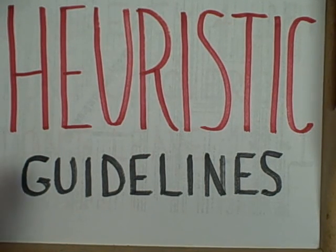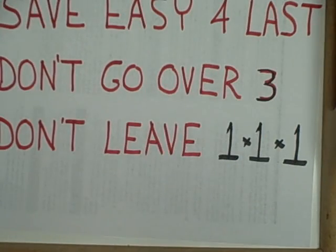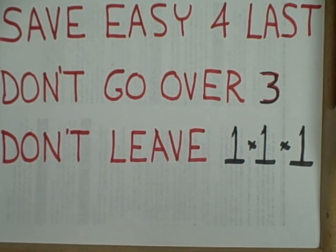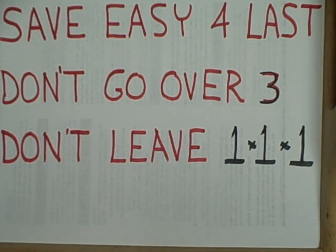In assembling this particular Soma Cube, I have come up with three guidelines for my heuristic. The first suggestion is that we use the most difficult pieces — the ones with four — first, and we save the easiest pieces for the last. The next suggestion is that since this is going to be a 3x3x3 cube, once we have made it four blocks wide or four blocks tall or four blocks long, we know we've done it wrong.